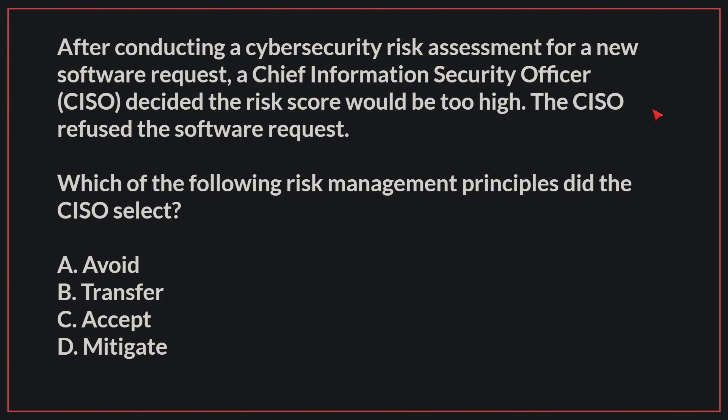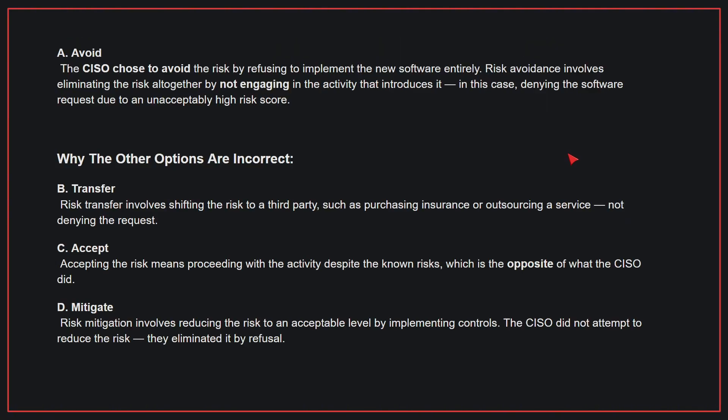Therefore, the correct answer is C. After conducting a cybersecurity risk assessment for a new software request, a Chief Information Security Officer decided the risk score would be too high. The CISO refused the software request. Which of the following risk management principles did the CISO select? The correct answer is A. Avoid. The CISO chose to avoid the risk by refusing to implement the new software entirely. Risk avoidance involves eliminating the risk altogether by not engaging in the activity that introduces it — in this case, denying the software request due to an unacceptably high risk score.